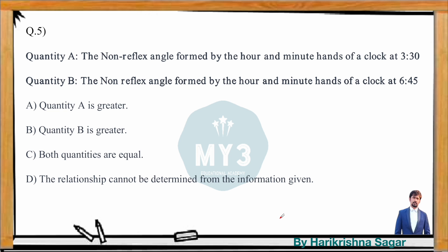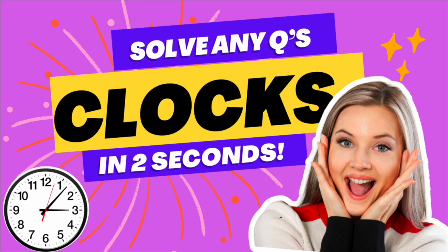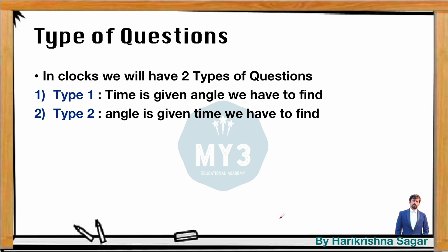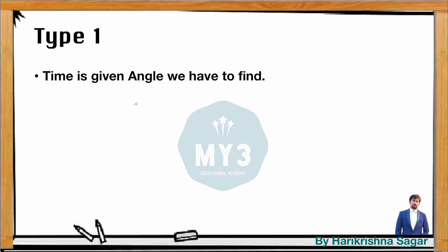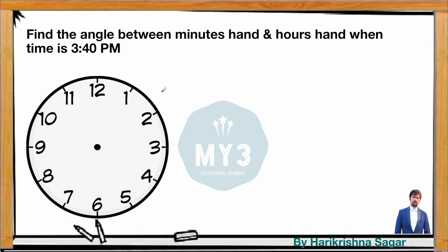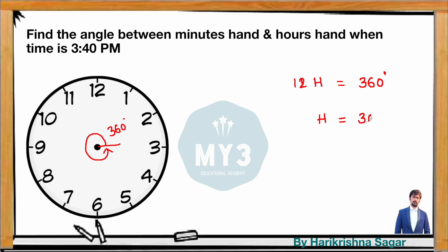Before solving, let's review the concept of finding the angle between the minute and hour hands. A clock has 12 hours and the total angle is 360 degrees. So all 12 hours together make 360 degrees, meaning 1 hour makes 30 degrees.